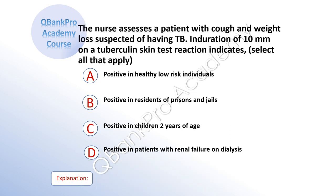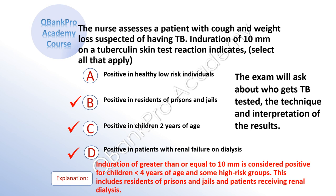The nurse assesses a patient with cough and weight loss suspected of having TB. Induration of 10 millimeters on a tuberculin skin test reaction indicates — select all that apply: A, positive in healthy low-risk individuals. B, positive in residents of prisons and jails. C, positive in children two years of age. D, positive in patients with renal failure on dialysis. Explanation: Induration of greater than or equal to 10 millimeters is considered positive for children less than four years of age and some high-risk groups, including residents of prisons and jails and patients receiving renal dialysis. The exam will ask about who gets TB tested, the technique, and interpretation of results.